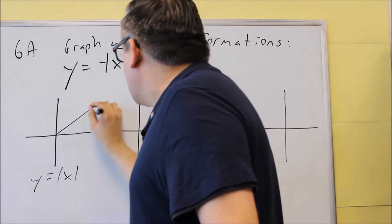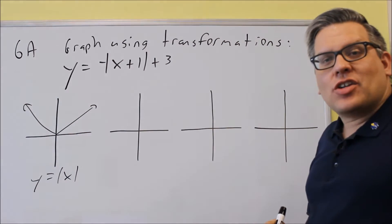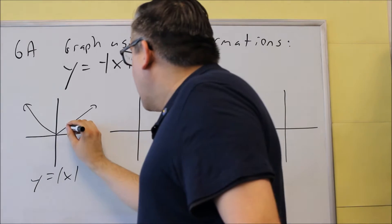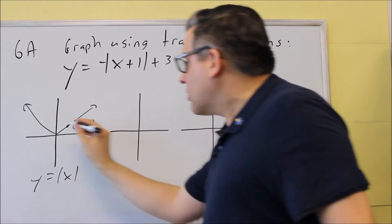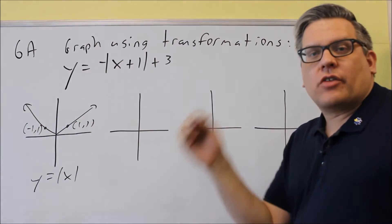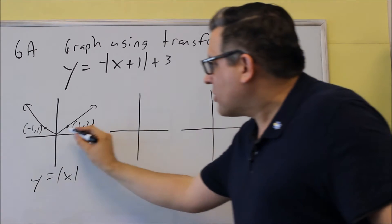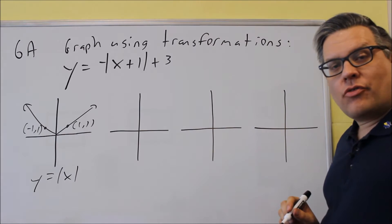Now if you take a look at those library of functions, we have a V-shaped graph there. And it goes through 1, 1, 2, 2, 3, 3, and so forth. On the negative side it goes through negative 1, 1, negative 2, 2, and so forth. So it basically goes up 1 over 1, up 1 over 1, all the way through.